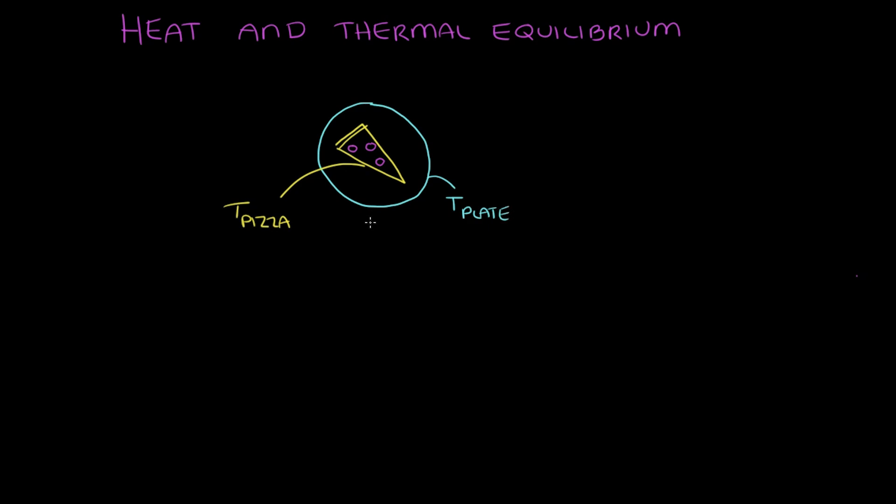So since the temperature of the pizza is higher than that of the plate, the plate starts to warm up. The pizza's temperature on the other hand will actually start to lower. And this will happen anytime the temperature of object one isn't the same as temperature of object two.